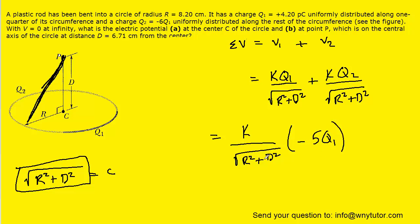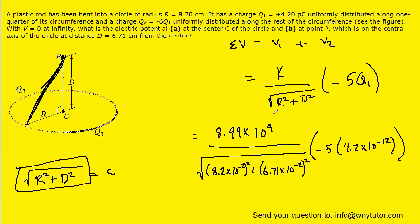And then we'll plug in the known values. d was also given to us in centimeters, so we'll multiply that by 10 to the minus 2 to get it into meters. And when we crunch that one down, we should get approximately negative 1.78 volts. So this is the correct answer to part B.